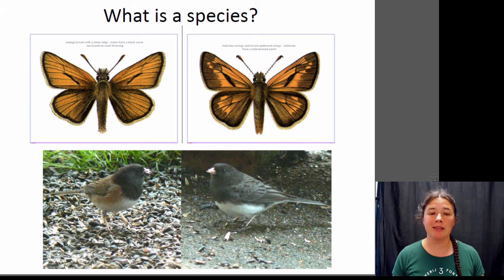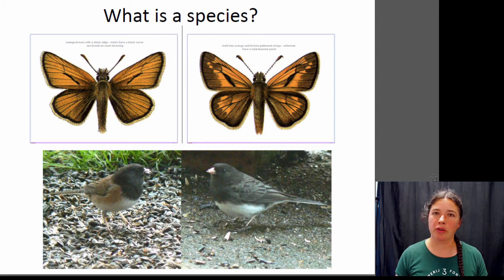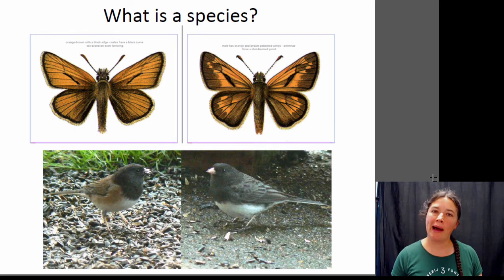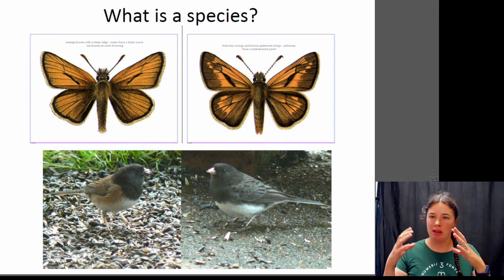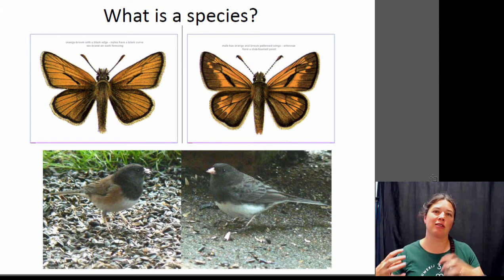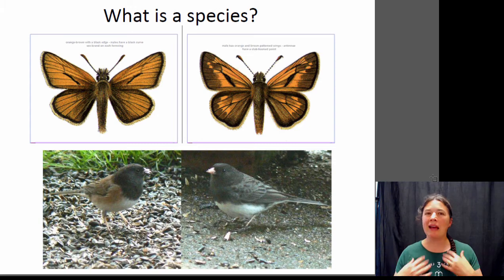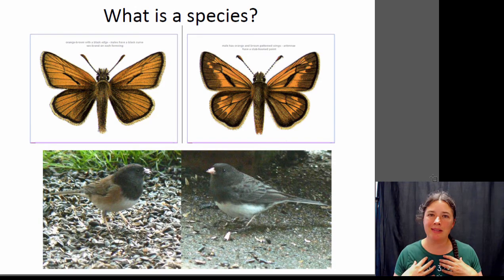The thing about species is that they are actually kind of an artificial construct. As humans we really like to categorize things and we like to make nice black and white distinctions between things that are the same and things that are different. In the real world, it's not so nice and tidy. We like to define things as species, but it's a little bit more of a gray area.